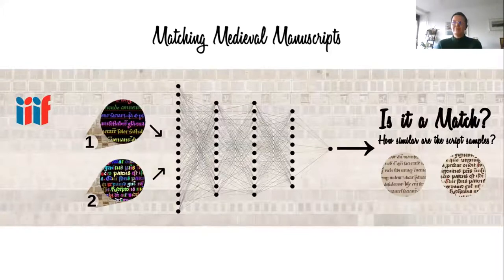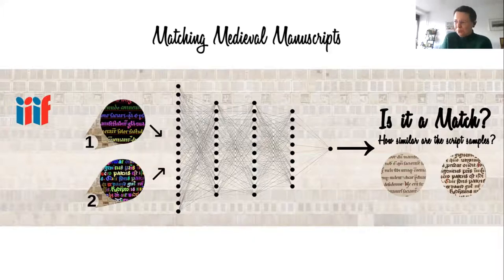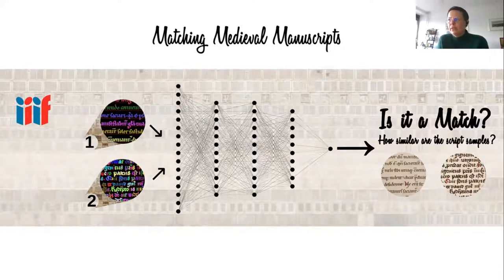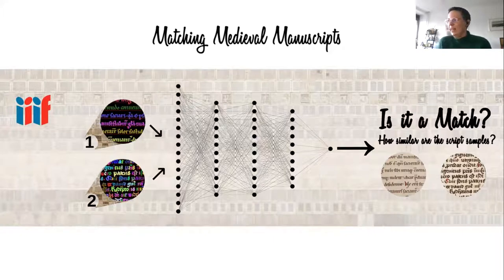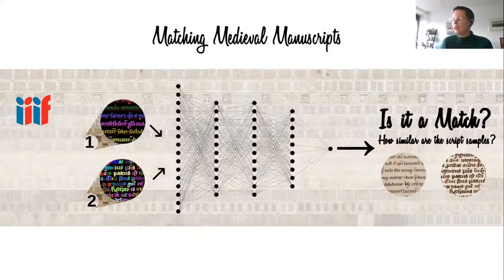This slide presents, in a nutshell, the setup of our tool. We use the manuscript pool available via IIIF, which is about 10,000-plus manuscripts. The idea is that you can feed one or two samples of script — like a page of a manuscript — into the search. It is processed through an artificial neural network. In the end, you get a calculated similarity score for the two script samples — whether it's a match or not — done by a contrastive loss function.